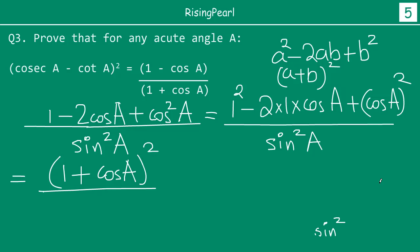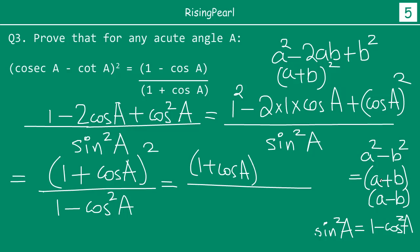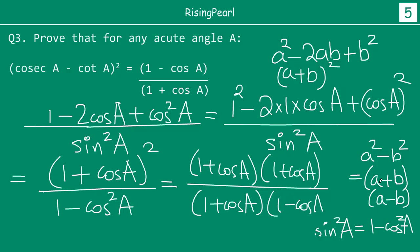So we have (1 minus cos A) whole square divided by sin square A. We know from our identity that sin square A is 1 minus cos square A. And 1 minus cos square A is A square minus B square, which equals (1 plus cos A)(1 minus cos A). So the numerator is (1 minus cos A)(1 minus cos A) divided by (1 plus cos A)(1 minus cos A). The two (1 minus cos A) terms cancel, leaving us with (1 minus cos A) divided by (1 plus cos A).